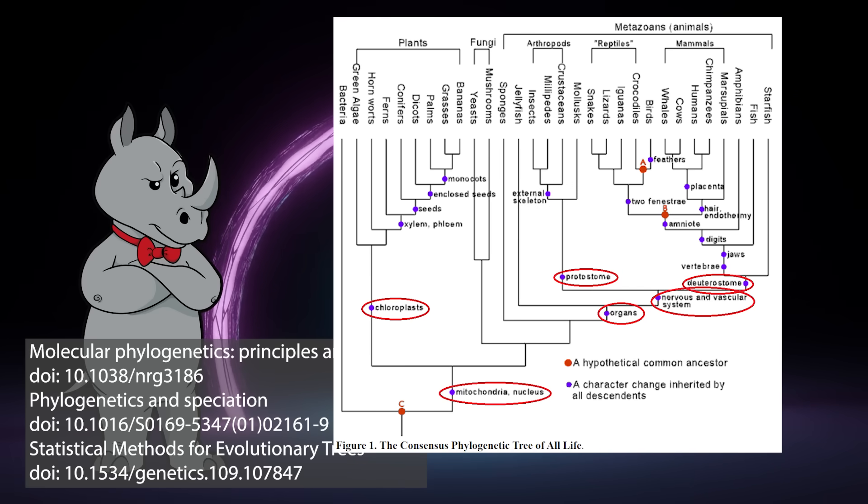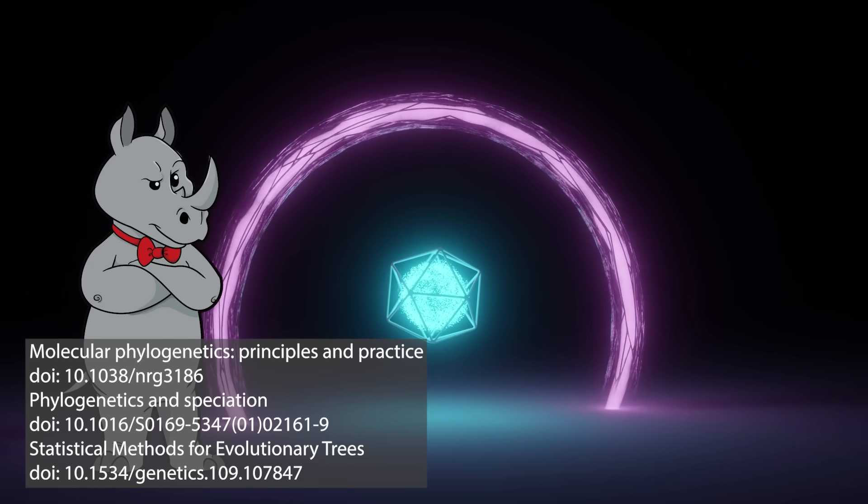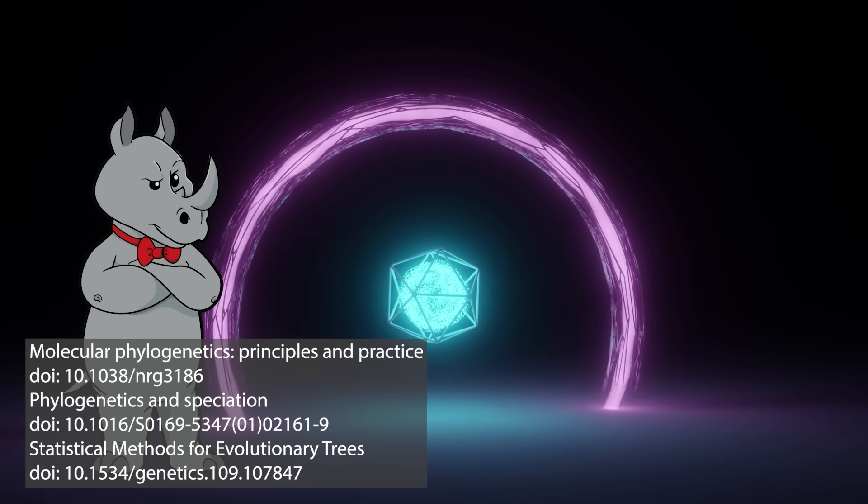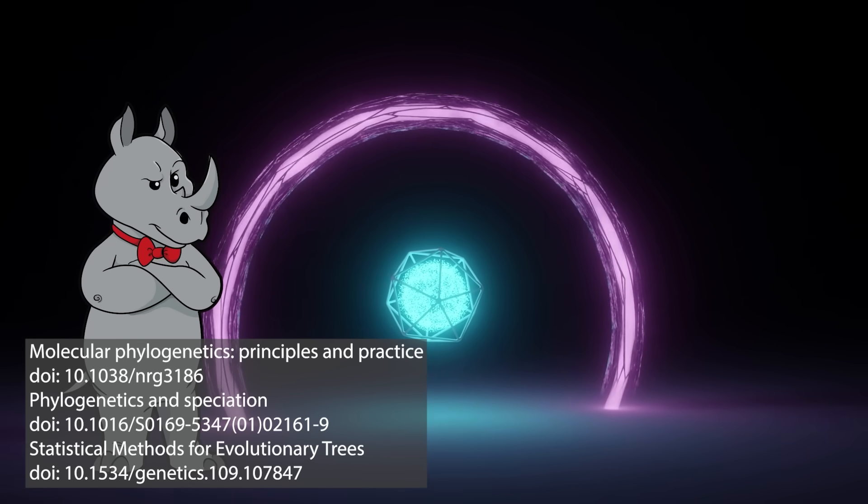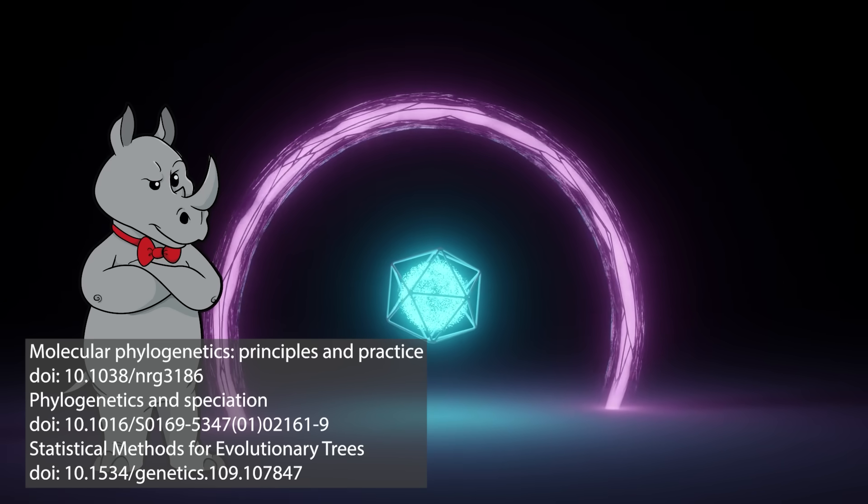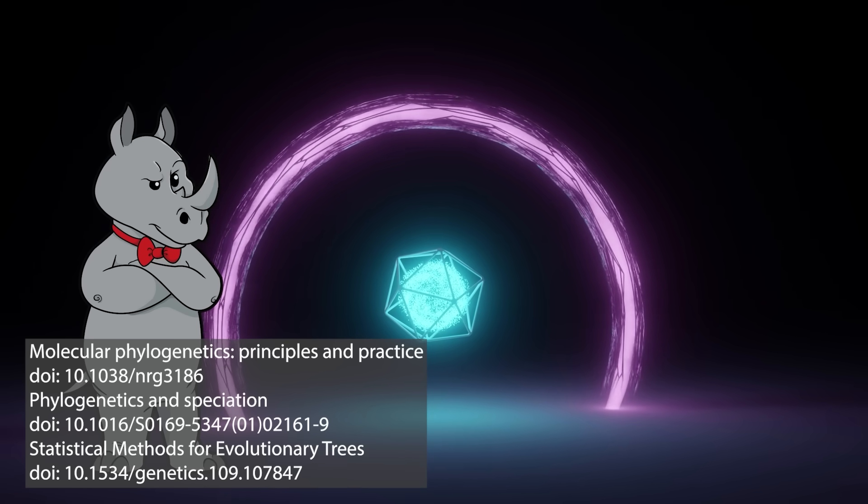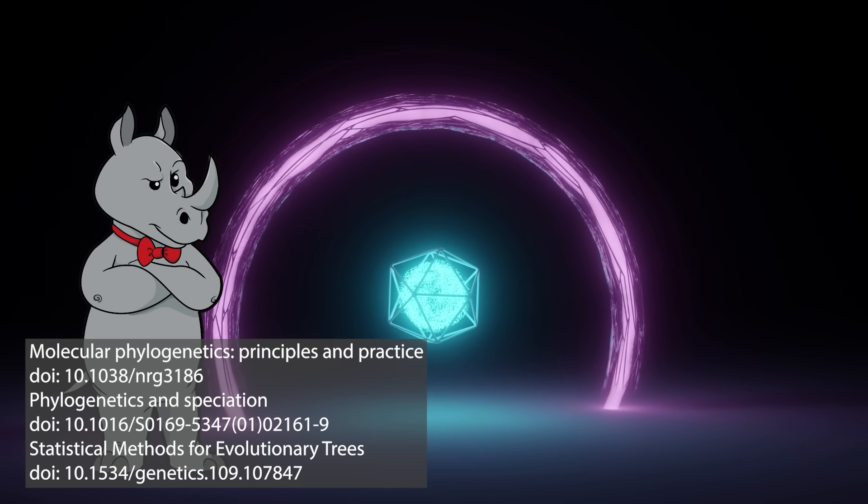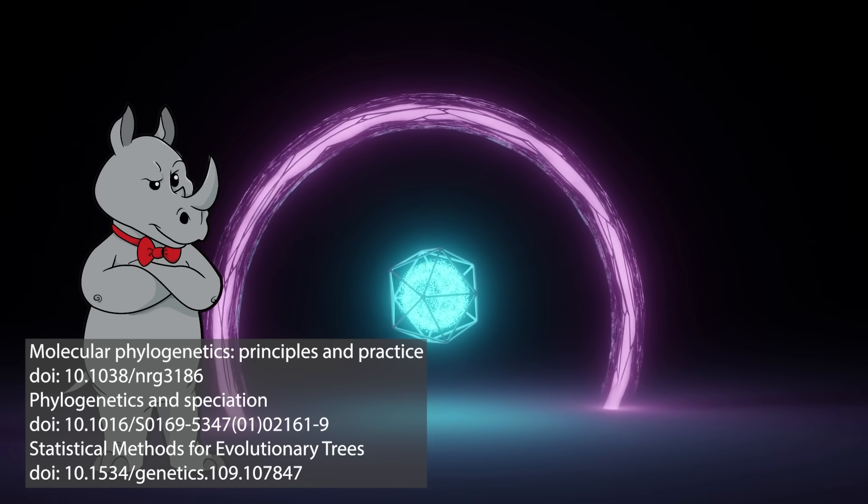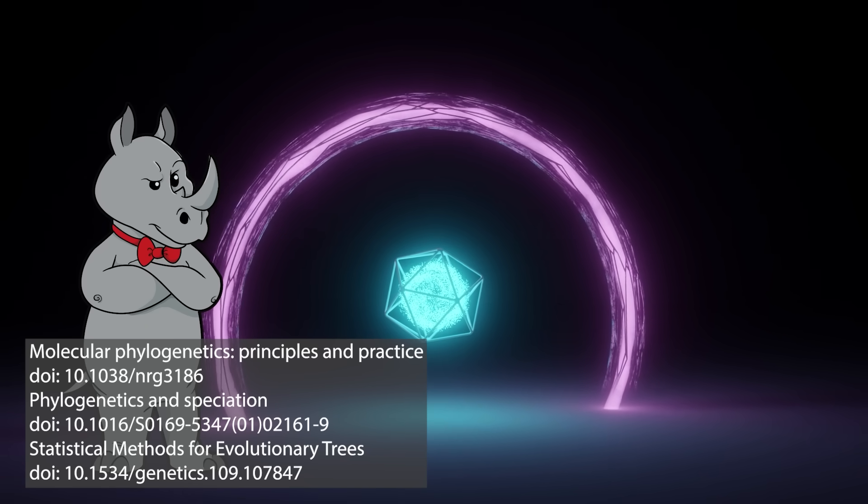But when you get to the more specific characteristics, it becomes more difficult to figure out. Because when you construct a phylogeny by only looking at one specific character trait, it could potentially conflict with the phylogeny that was created by looking at a different specific character trait in the same organism. And this is further complicated by the fact that this is usually done in the context of determining the relatedness of extant organisms.